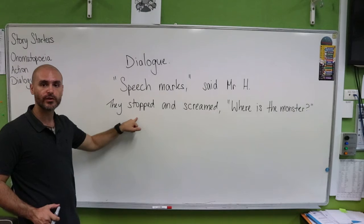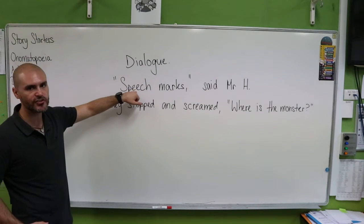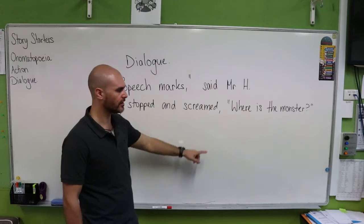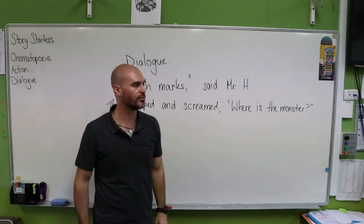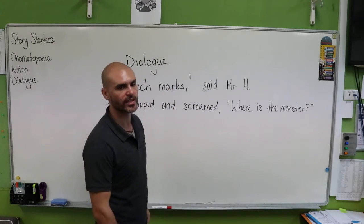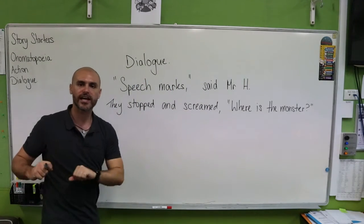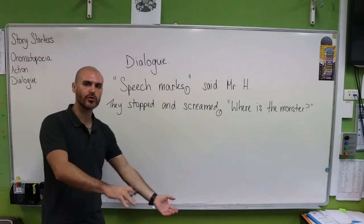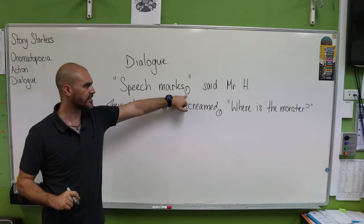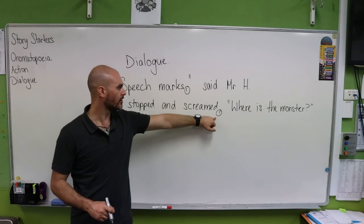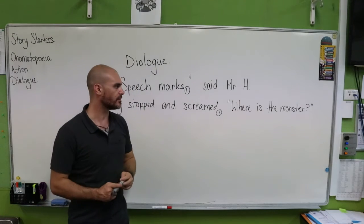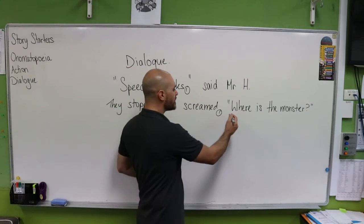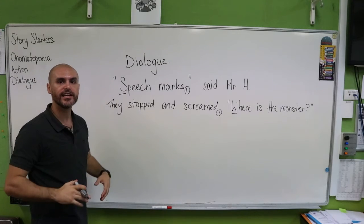The next option when using speech marks is when our speech isn't at the beginning of a sentence — it might be at the end or in the middle. For example: 'They stopped and screamed,' then a comma, then speech marks and a capital W: 'Where is the monster?' Whenever we're going into or out of our speech marks, we need to use our commas. Commas show that we're coming into or out of our speech. We also need to make sure we use capital letters as the first letter inside our speech marks.